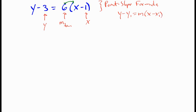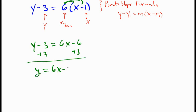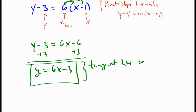And we can distribute this 6 through here. Add 3 to both sides to isolate the y. And this is our tangent line equation in slope-intercept form.